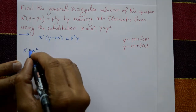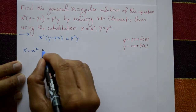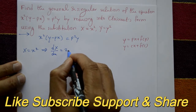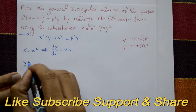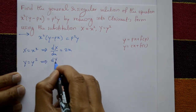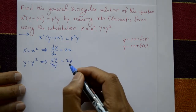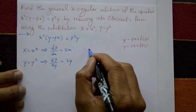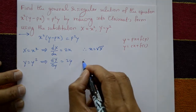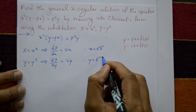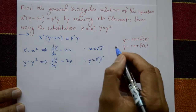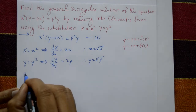By substitution, let capital X equal to x squared. Differentiating X with respect to small x gives 2x. Let capital Y equal to small y squared. Differentiating capital Y with respect to small y gives 2y. Therefore small x equals square root of capital X, and small y equals square root of capital Y.